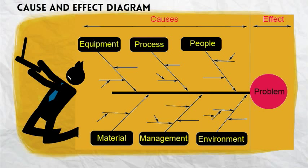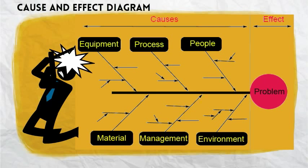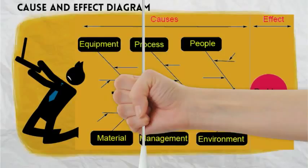As you can see from this chart, the Fishbone Diagram identifies many possible causes for an effect or problem. It can also be used to structure a brainstorming session. It immediately sorts ideas into useful categories.